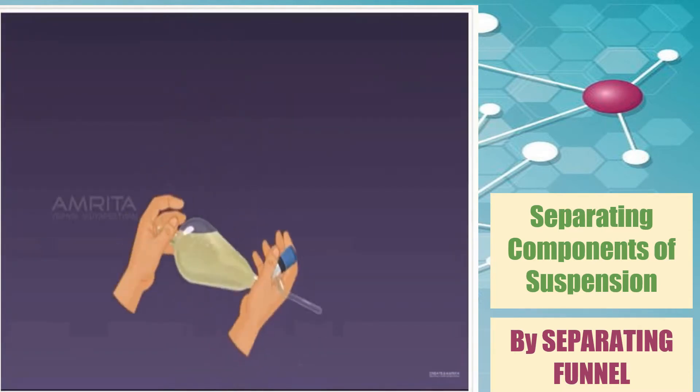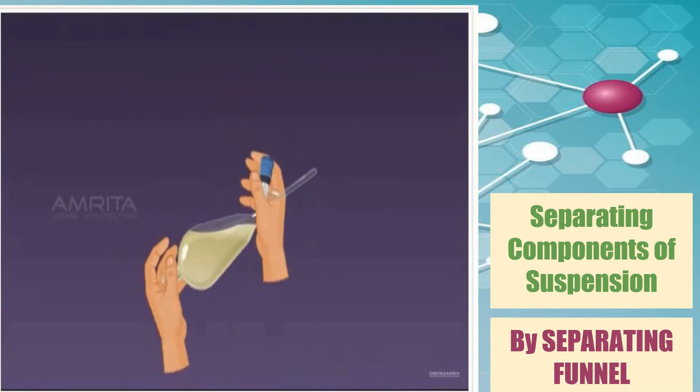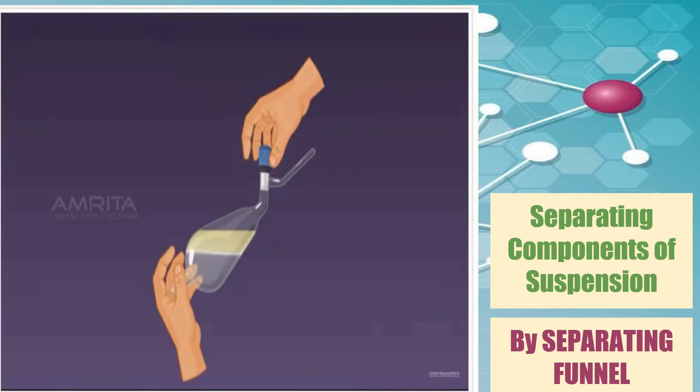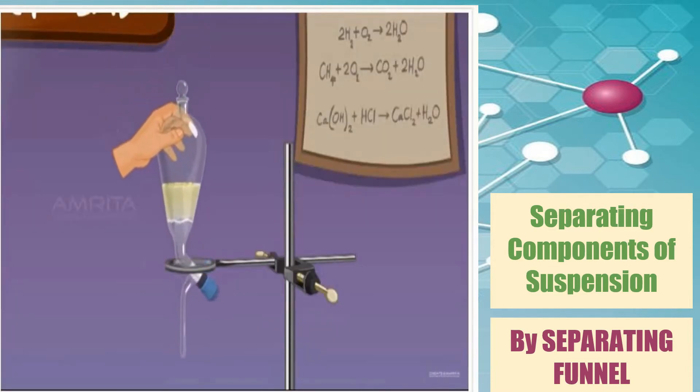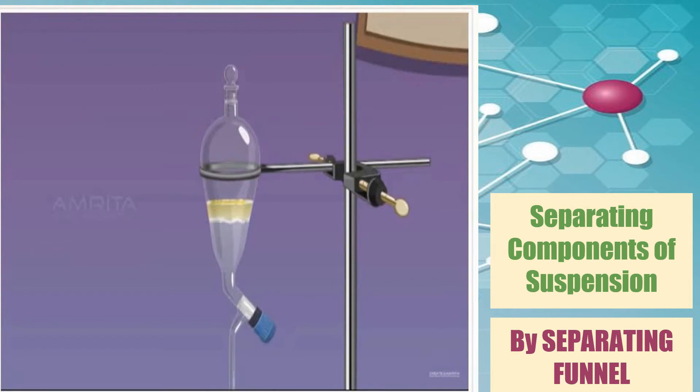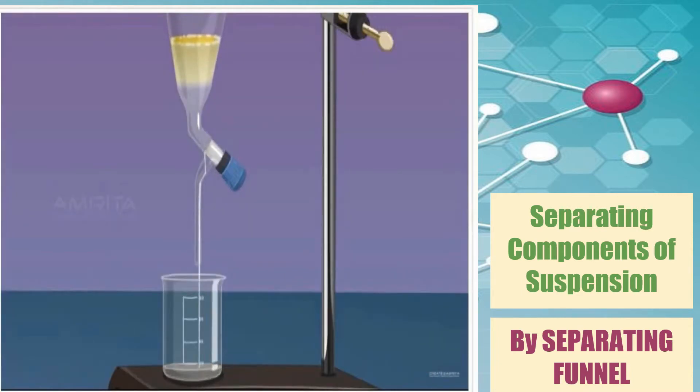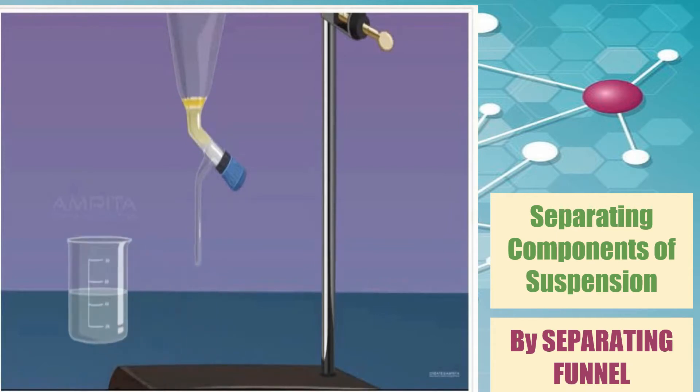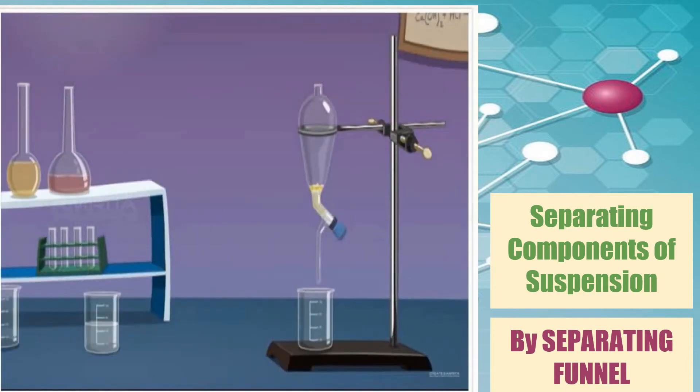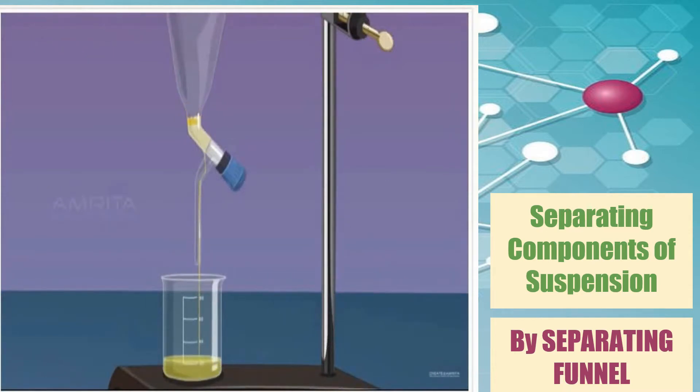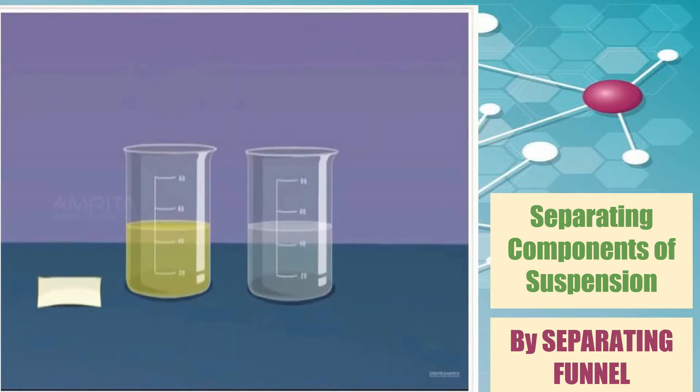After the two mixtures are placed inside the funnel, they are shaken well and the pressure is released from the funnel. The stopper is open to release the heavier liquid into a clean beaker and it will be closed before the oil comes out. Another beaker is used to recover the oil. And now oil and water are separated.